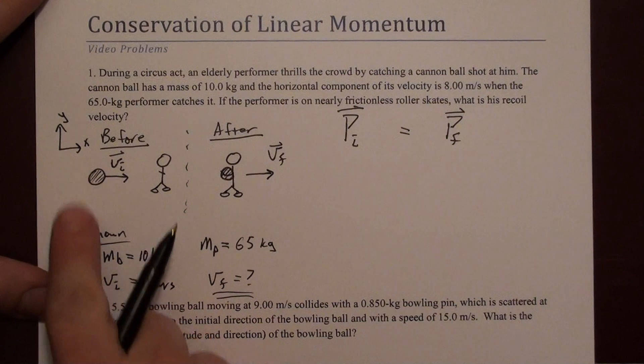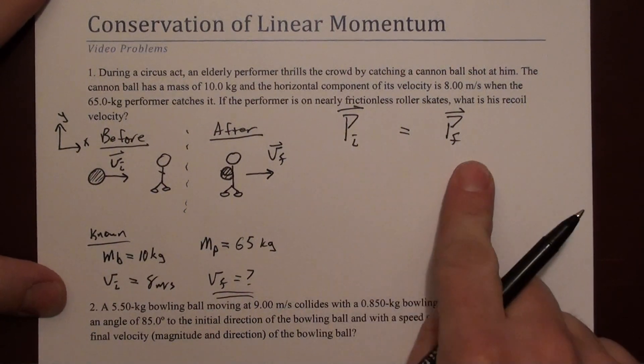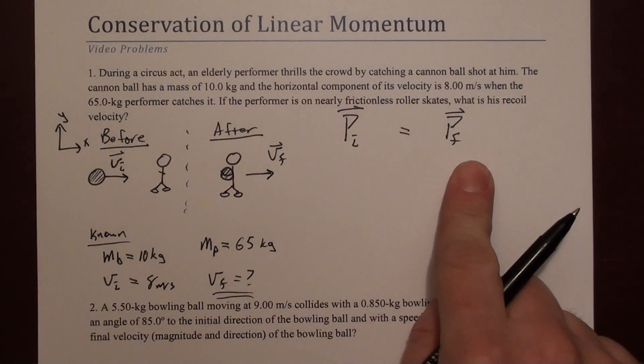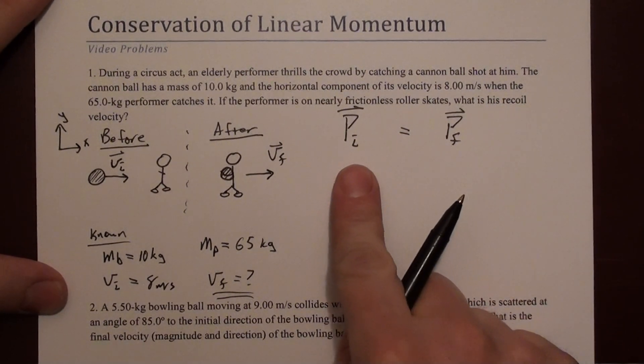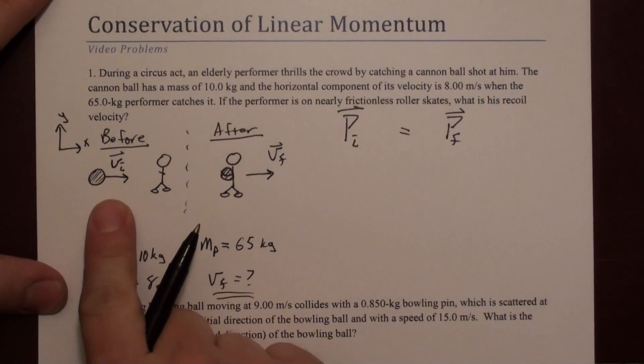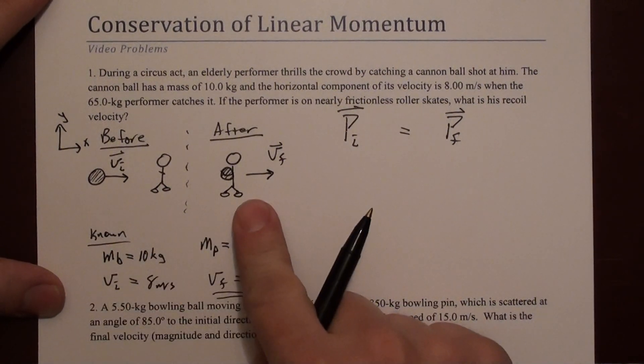It's all in what we've labeled as the x direction, so this vector equation can simplify to just stuff in the x direction. We're going to add up all of the momentum before and set it equal to all of the momentum afterward.